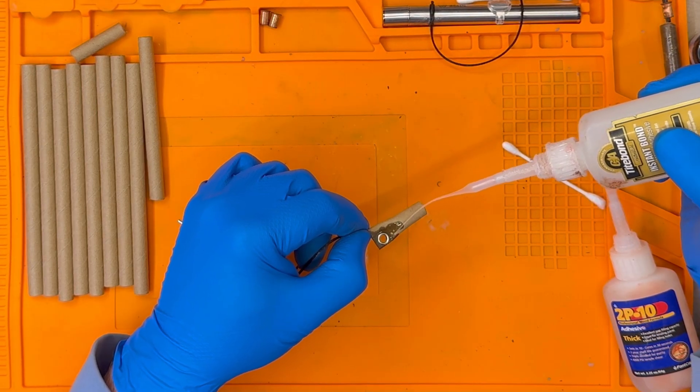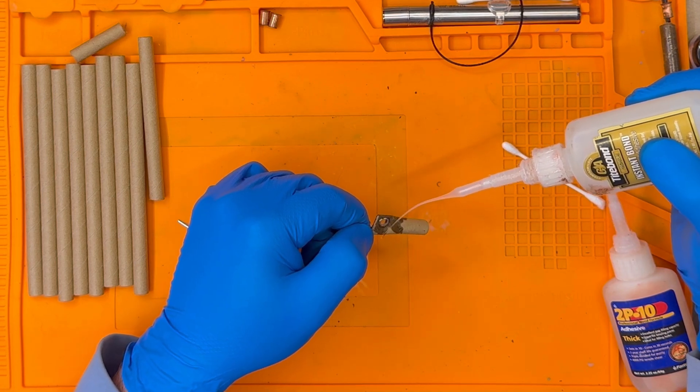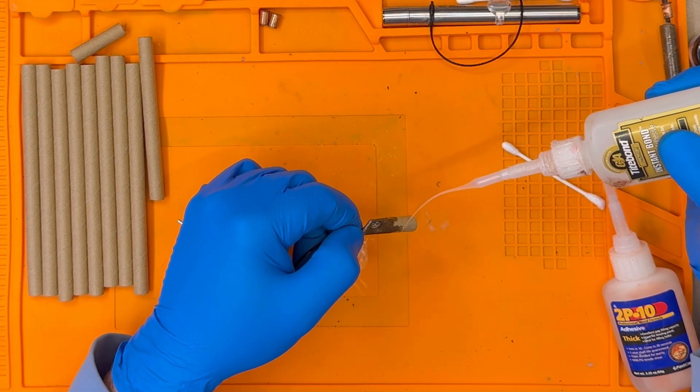Once the grommet is installed, we definitely want to coat this tube in thin CA glue or epoxy. It is important that the grommet is strongly held in place.